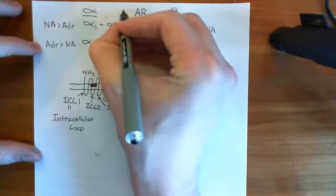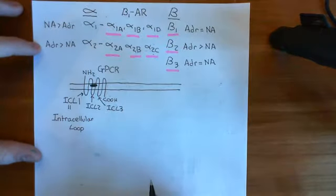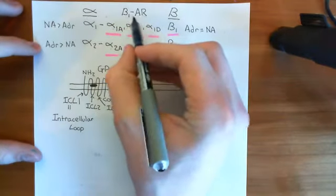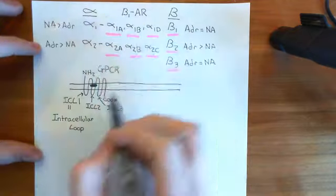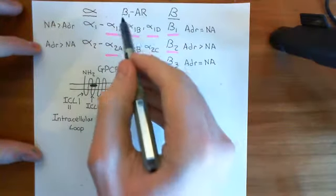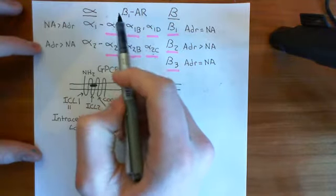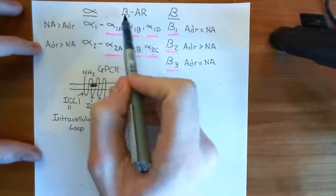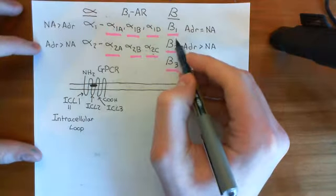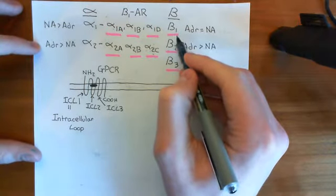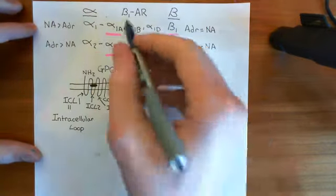If you wanted to talk about the beta-1 adrenoceptor, you would say beta-1AR. It's nice to put the AR to clarify that you're talking about the adrenoceptor, because heterotrimeric G proteins are going to have beta-1 subunits too. So it is helpful to clarify that you mean the beta-1 adrenoceptor by putting AR.